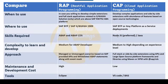For CAP, you should have a good understanding of Java and Node.js — preferably Node.js, because today almost over 80% of CAP applications are built using Node.js, due to its asynchronous non-blocking processing and the large ecosystem of Node.js. Coming to complexity to learn and develop: when building a RAP application, it is medium complexity for an ABAP developer, but medium to high depending on your experience level and ability to adapt to new technologies.